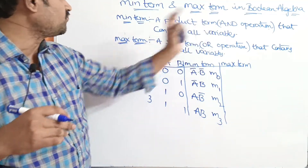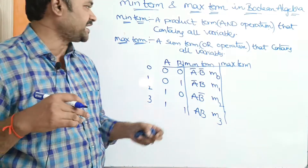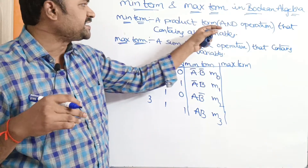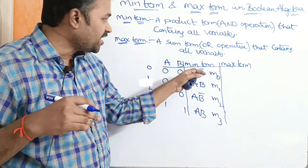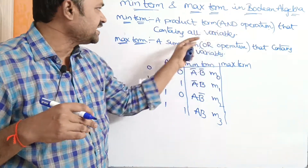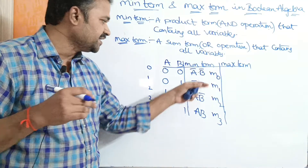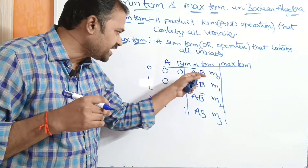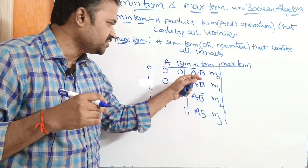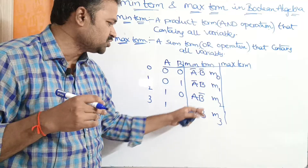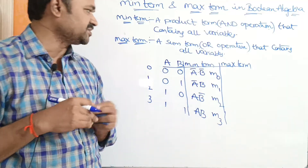So this is about what is a minterm — a product term under AND operation that contains all the variables. Here each minterm contains both variables A and B.